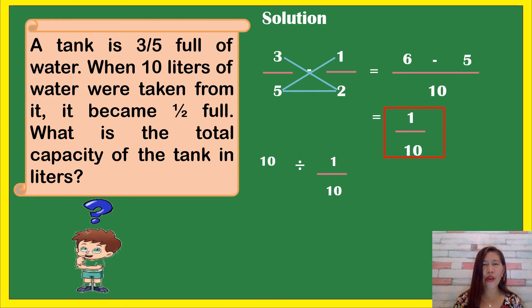In dividing fractions, just cross multiply. 10 times 10 equals 100 over 1.